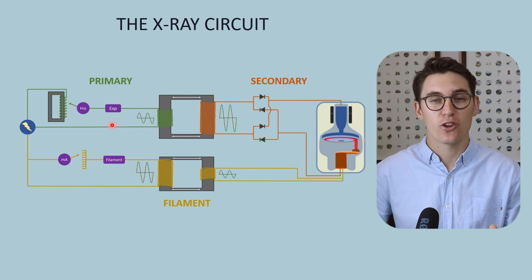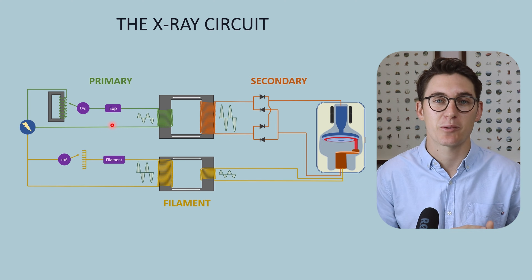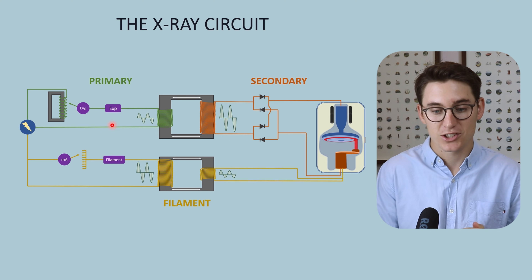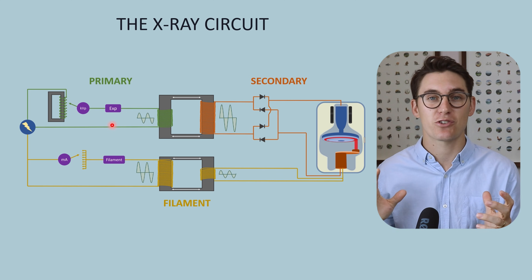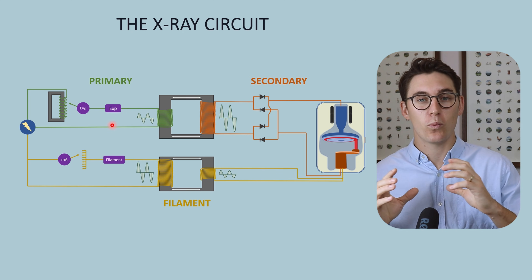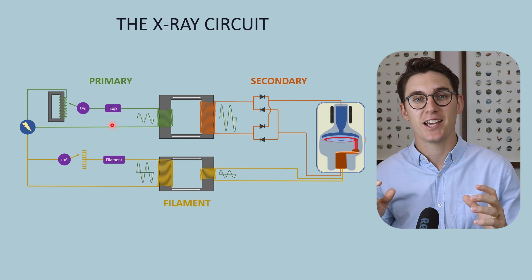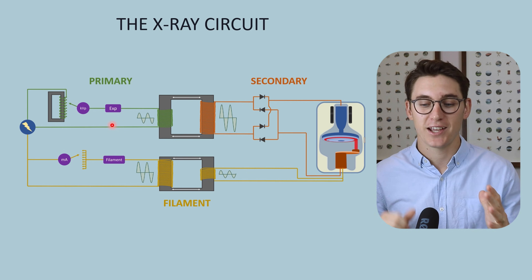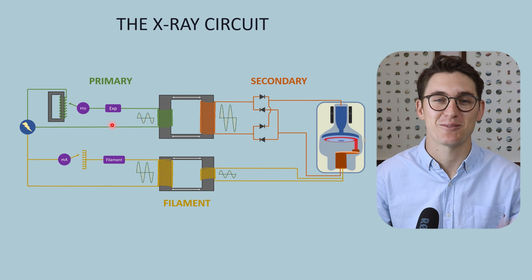Those are high-yield exam questions, so I highly recommend checking out the question bank linked below. Now let's move our attention to the secondary circuit, where we change that alternating current into direct continuous current in our x-ray tube. I'll see you there.